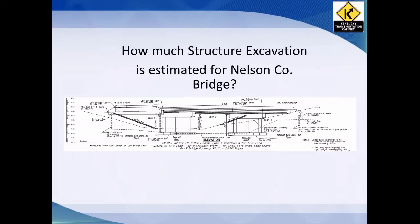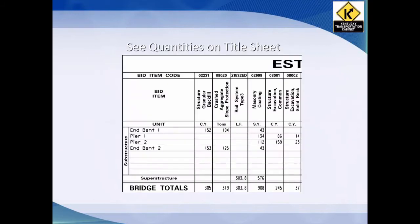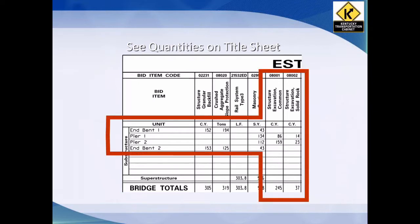How much structure excavation is needed for the Nelson County Bridge shown on the next slide? The title sheet gives us quantities for the job. Structure excavation is found here with common and solid rock. We have quantities at Pier 1 and Pier 2, none at Abutments 1 and 2. At the bottom it gives you the totals: 245 cubic yards of excavation common and 37 cubic yards of solid rock. There isn't any at the abutments because abutments are built on a fill, so there is no excavation. For more information on that, refer back to our bridge component video.